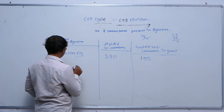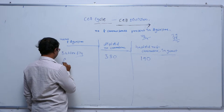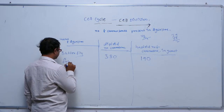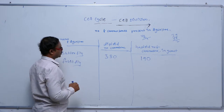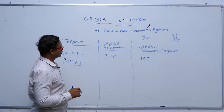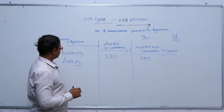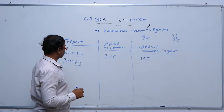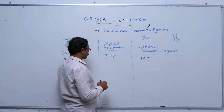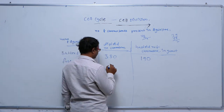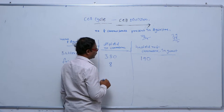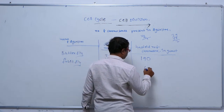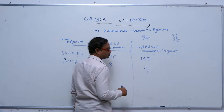After house fly, in fruit fly the diploid number of chromosomes is 8, and the haploid number of chromosomes is 4.